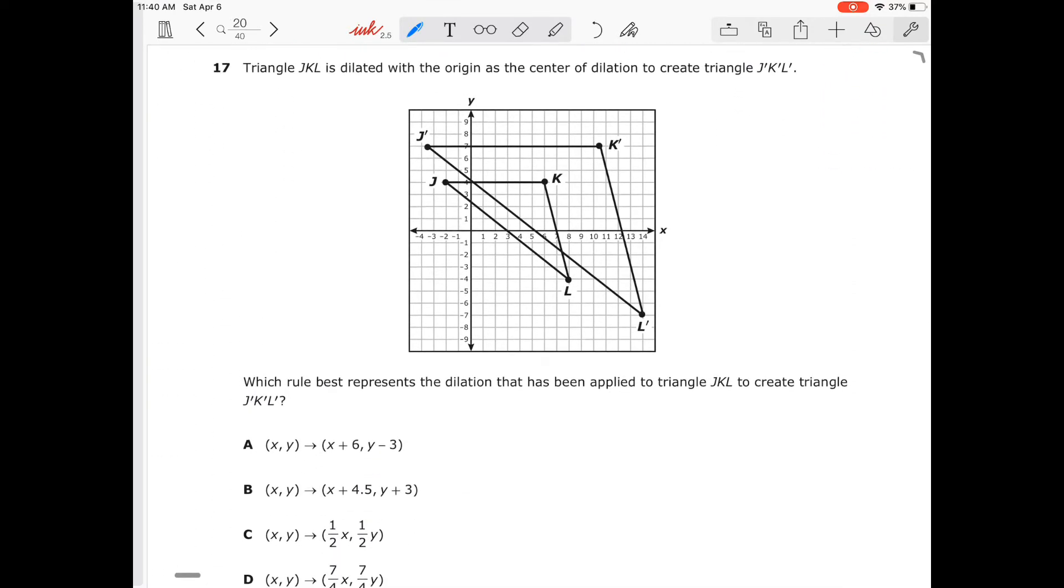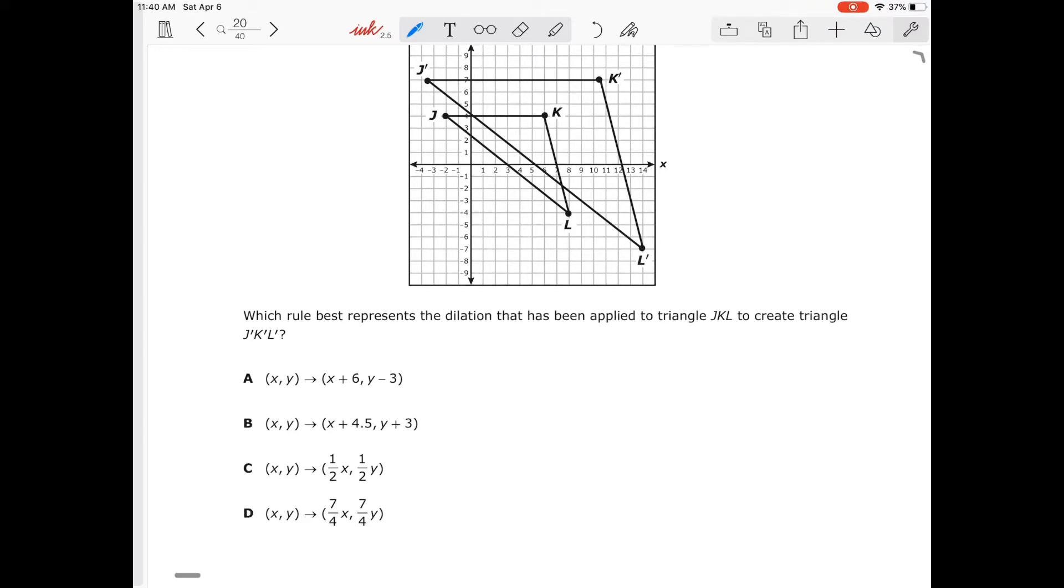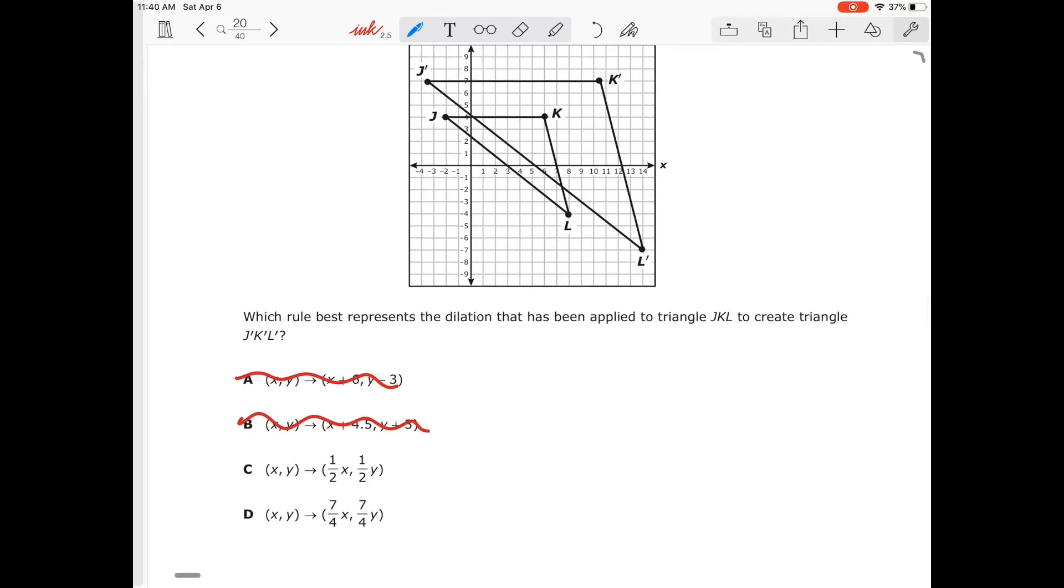Number 17. We have a dilation, which rule represents the dilation that's been given on the triangle. So that's going to eliminate A. A and B both are translations. So C and D have the dilation. So remember, to get my scale factor, scale factor is going to be equal to j prime over j.